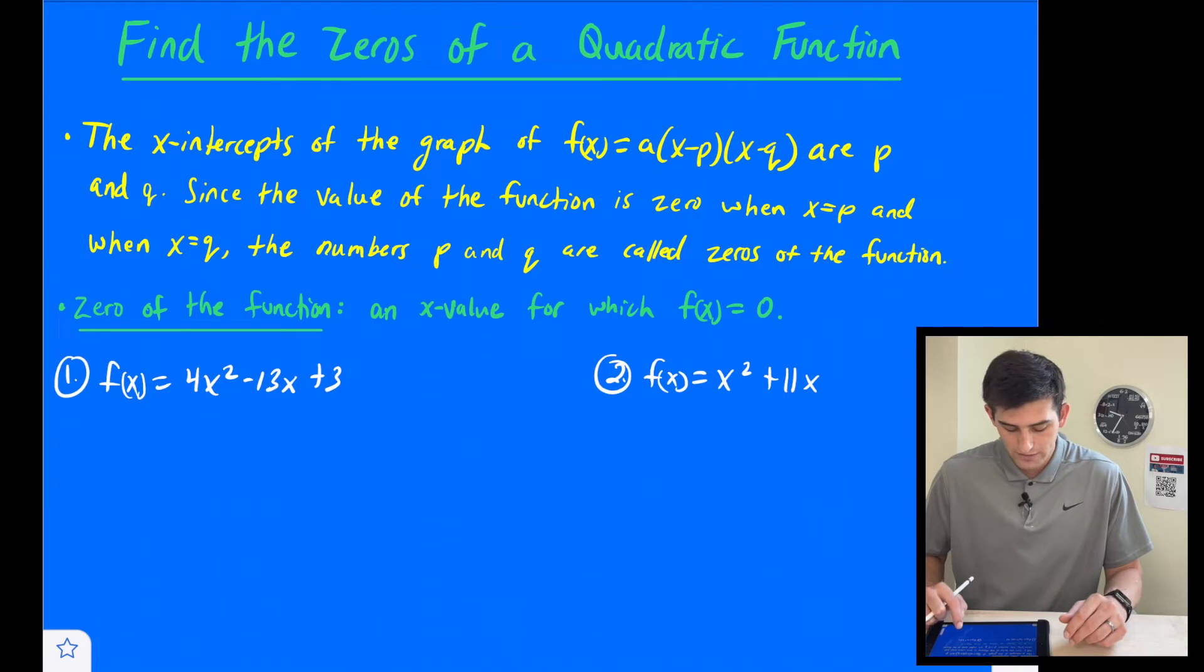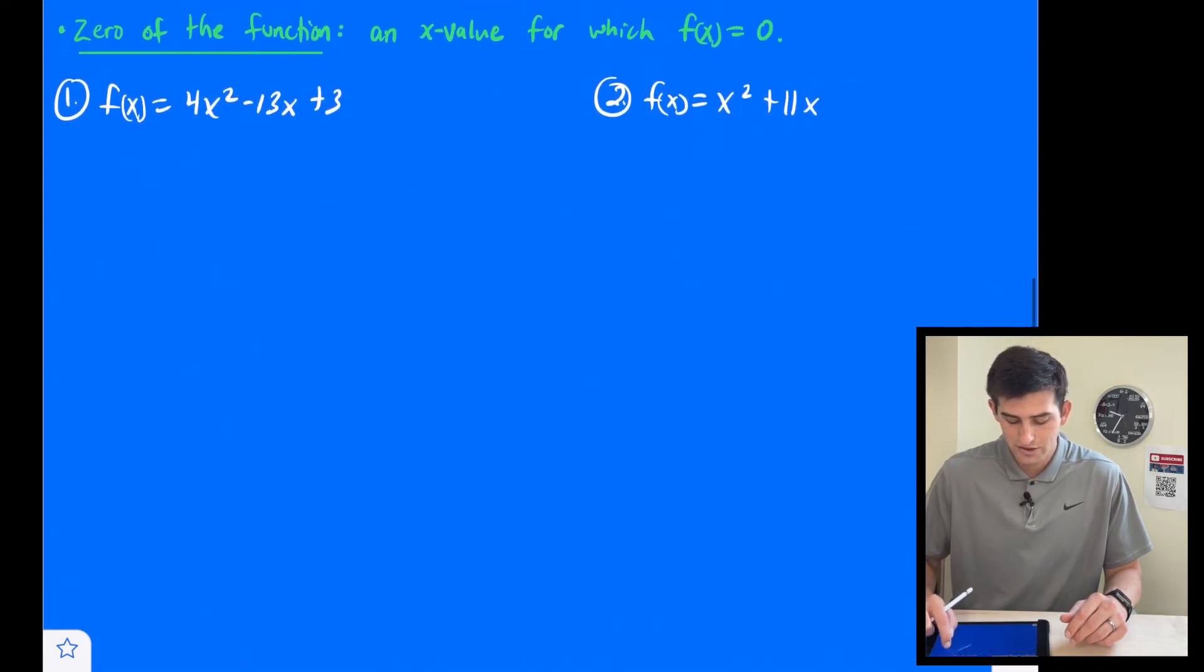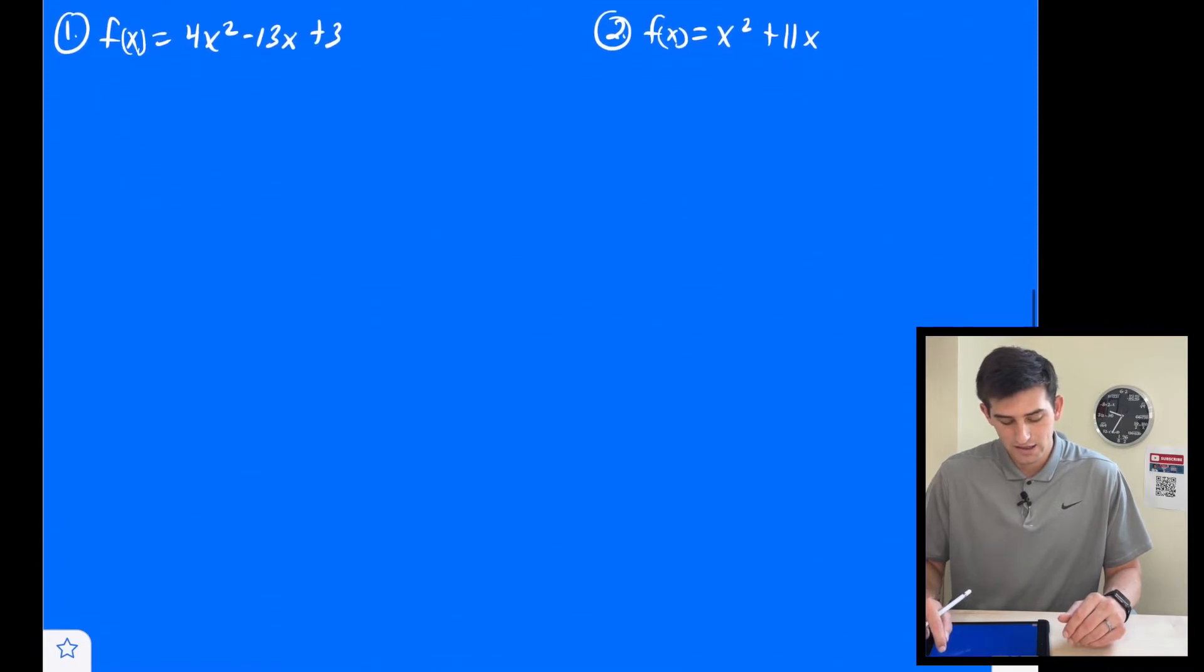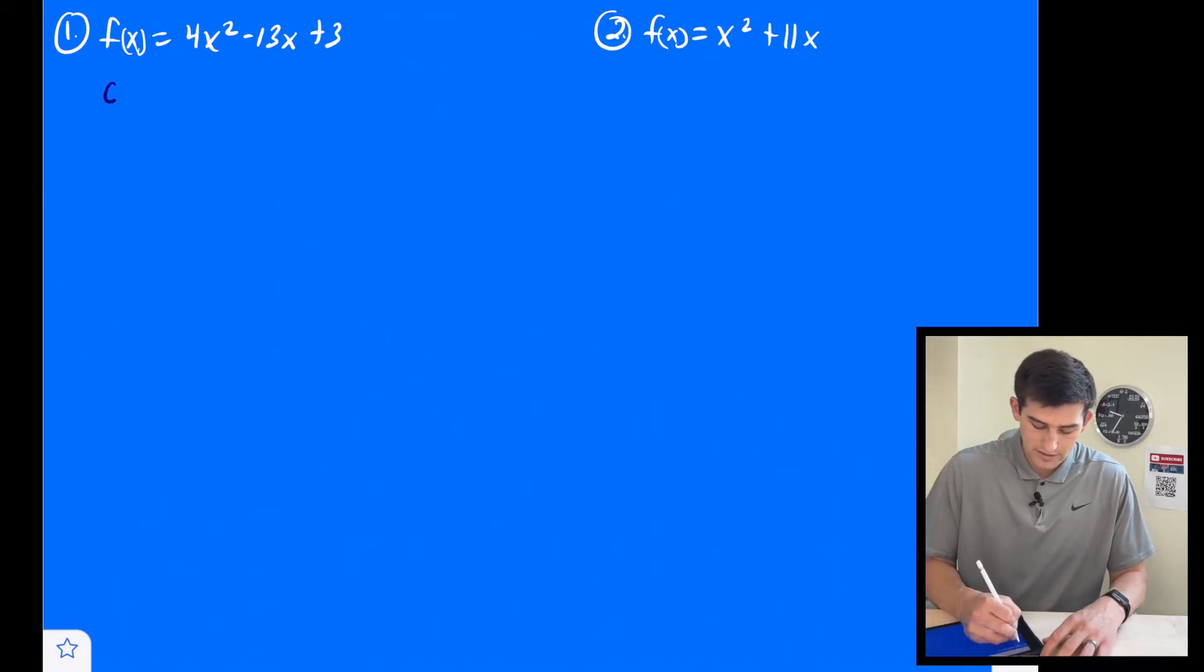Okay, so we're going to find the zeros of the function or basically just an x value for which f(x) or y is equal to zero. So we're going to set each of these equal to zero. So we have f(x) = 4x² - 13x + 3. And we're going to write this as 0 = 4x² - 13x + 3.